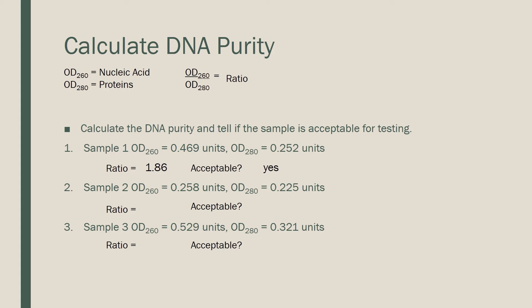Example 2: we have an OD260 of 0.258 and an OD280 of 0.225. This gives us a ratio of 1.15. Is this acceptable? Remember in our ranges, anything less than 1.6 is not acceptable. This is well below the 1.6 cutoff, so this is not an acceptable specimen.